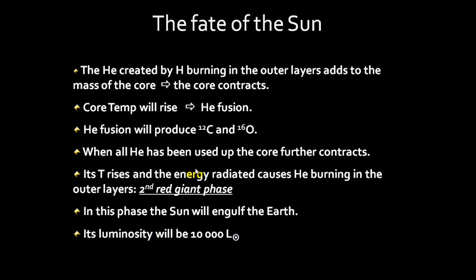The helium created goes to the core, the core contracts, and eventually the core temperature rises so you get helium fusion. The fusion produces carbon and oxygen. When the helium is used up, the core contracts even further and you enter the second red giant phase, with helium burning in the outer layers. The Sun will expand and engulf the Earth, becoming 10,000 times brighter than it is now.